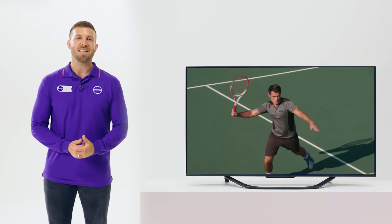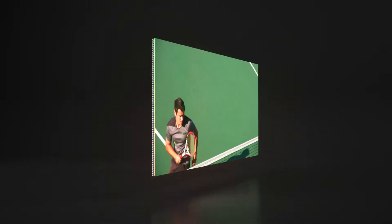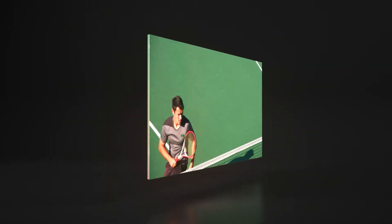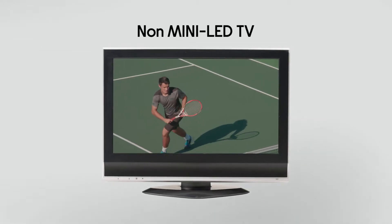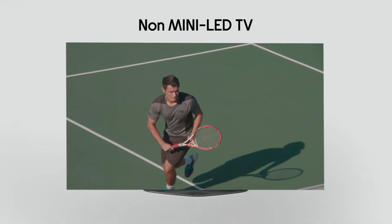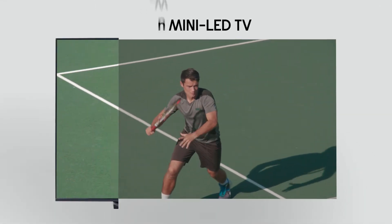Mini LEDs use mini diodes to form a white backlight with a higher concentration of LEDs than you'd get with a standard LED TV. The white backlight then shines through this layer giving you a brighter image.